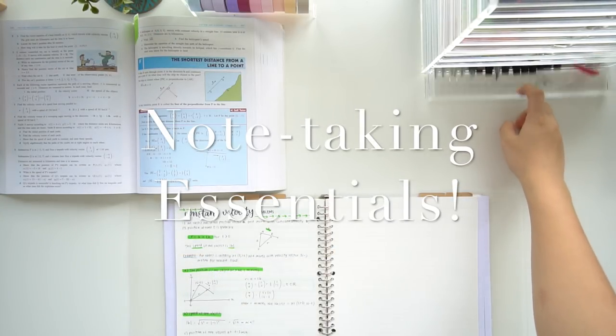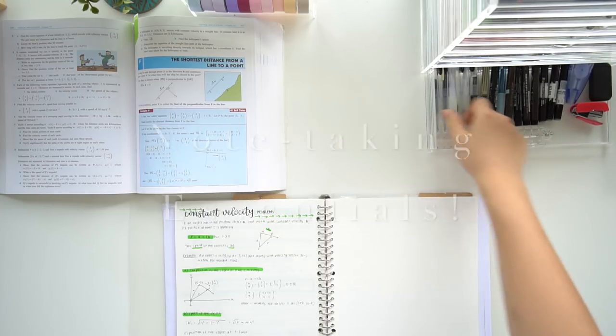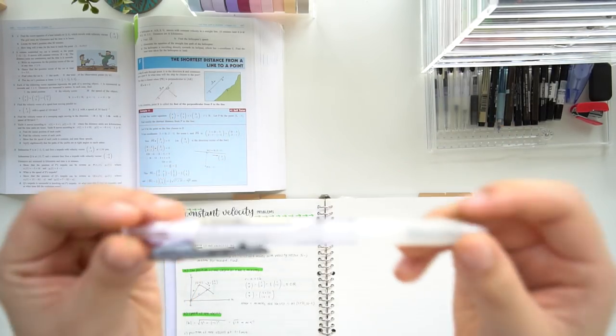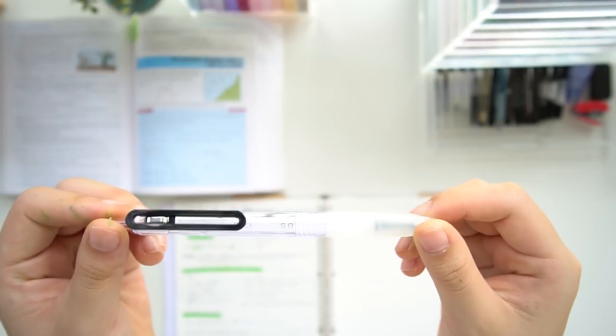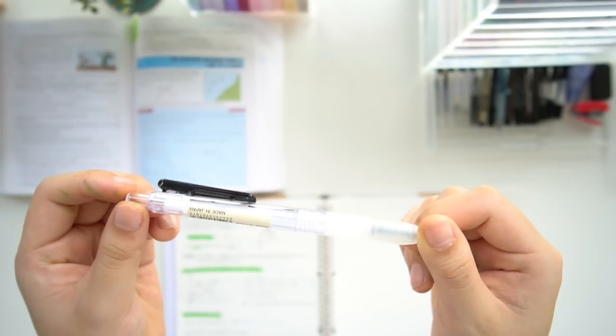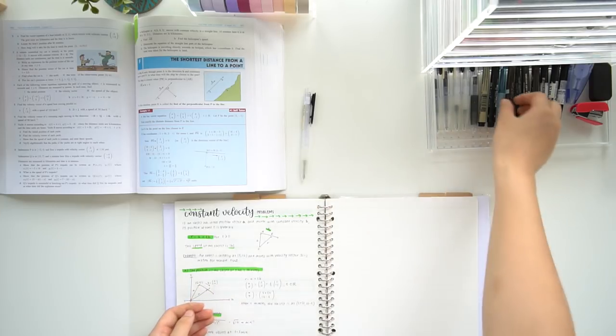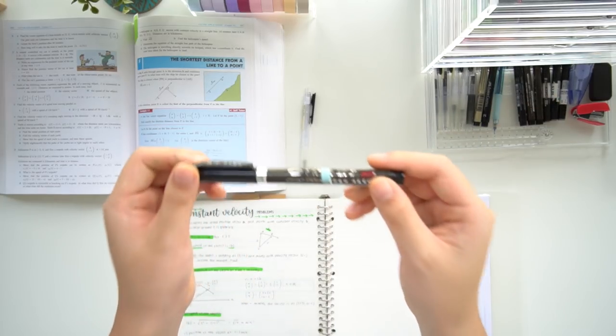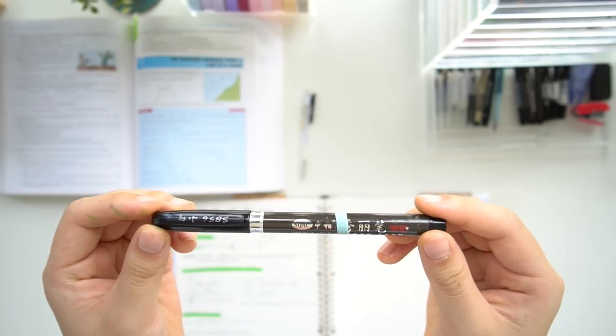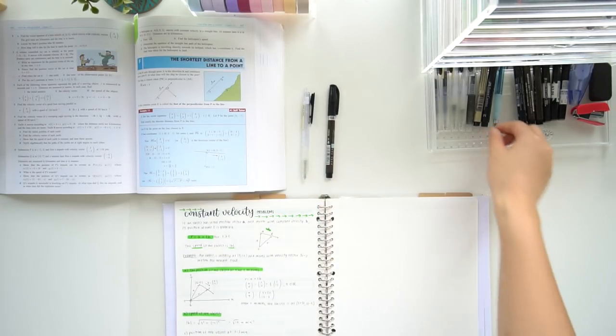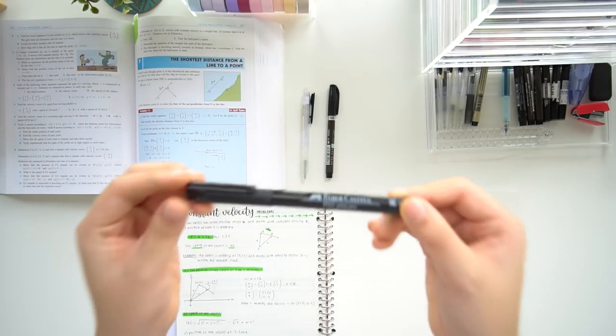The following are some of my note-taking essentials that I always use whenever I write notes. This is really up to your preference, but I like to use a black pen, and this one's a 0.5 gel pen from Muji. And then for my headers I always use this small brush pen from Notebook Therapy and also a thicker fine liner from Faber-Castell.